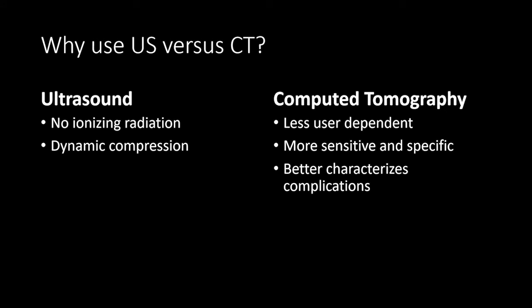So why use ultrasound versus CT? Ultrasound is preferred because it does not require ionizing radiation, and children in particular are more sensitive to ionizing radiation than adults. Ultrasound also has the advantage of dynamic compression to assess whether an equivocal appendix of 6 to 8 millimeters will compress with pressure. CT does have advantages — it's less user-dependent, more sensitive and specific across a large range of meta-analyses, and better characterizes complications such as perforated appendicitis, inflammatory phlegmon, abscess, or bowel obstruction. However, CT has the disadvantage of ionizing radiation, so we try to avoid it unless ultrasound is equivocal.